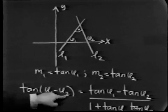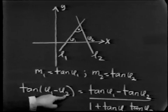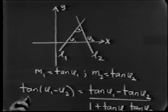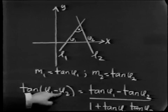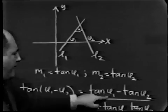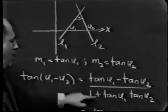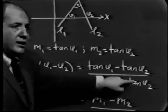Should have had this phi2 minus phi1, but since that just changes the sign, that will not have any bearing on the point I want to make. Let's continue this way. Tangent of phi1 minus phi2 is tan phi1 minus tan phi2 over 1 plus tan phi1 tan phi2.